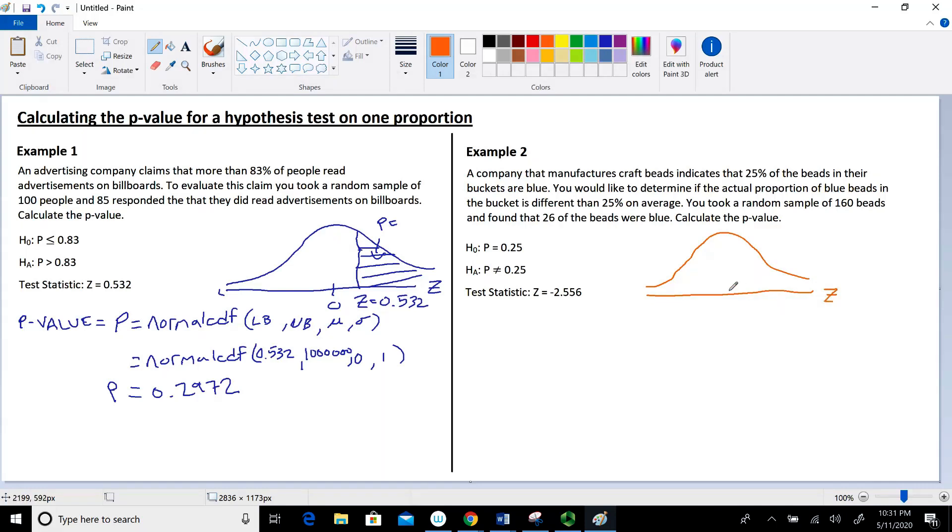We have our Z or standard normal distribution. The mean is 0. This time we have a test statistic of negative 2.556, which is quite a ways to the left of 0. I'll place that here for our test statistic.